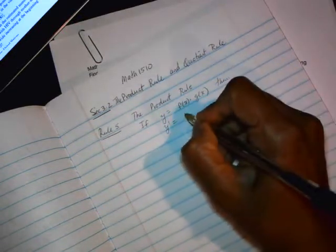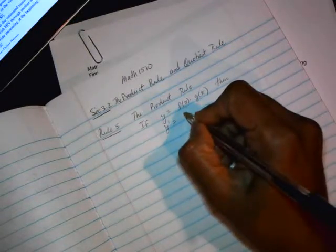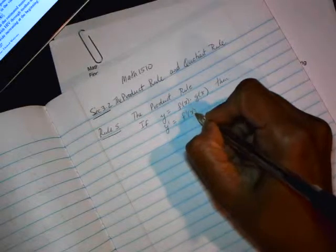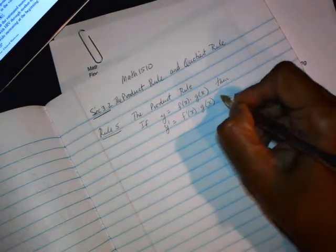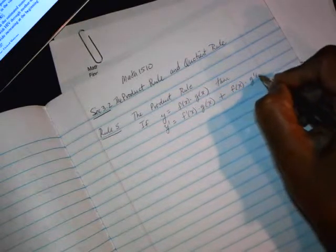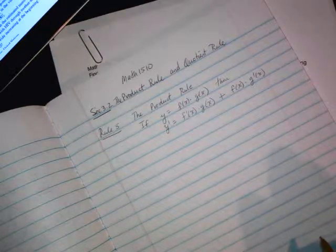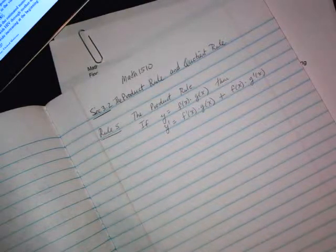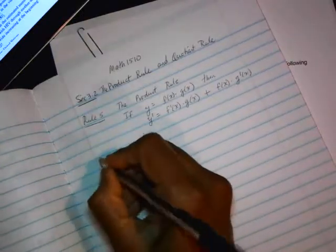y prime is equal to not the product of the derivatives as you might expect, but rather you take the derivative of the first, keep the second as it is, plus keep the first as it is and multiply it with the derivative of the second. So it's kind of strange how it works, but I can show you with an example as to why it is the way it is. So let's do that right away.